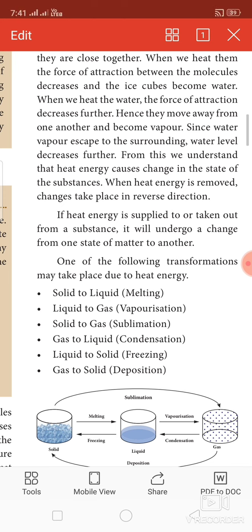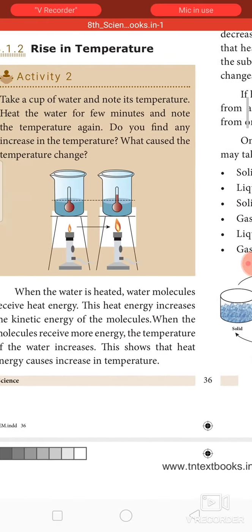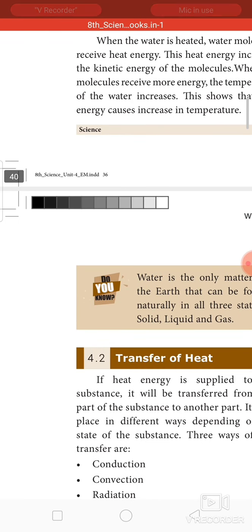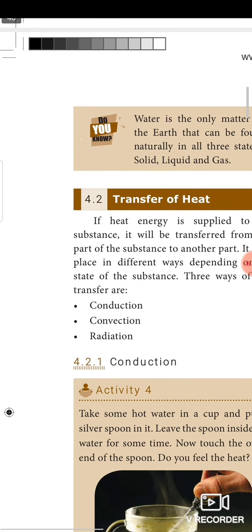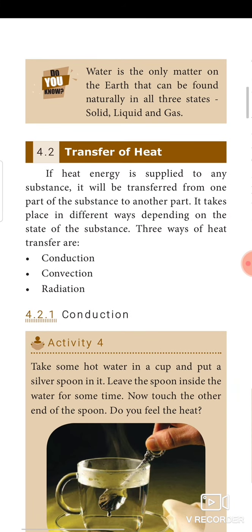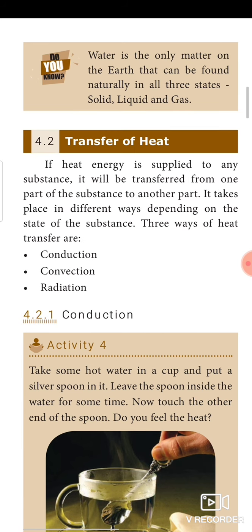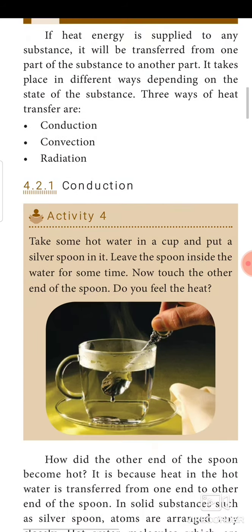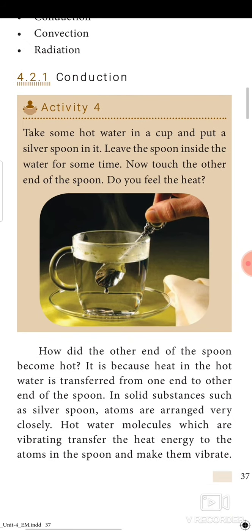Next: transfer of heat. If heat energy is applied to any substance, it will be transferred from one part to another part of the substance. This transformation takes place in different ways depending upon the state of the substance. There are three types of heat transfer: conduction, convection, and radiation.